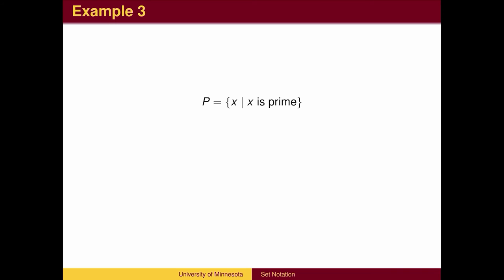Here is a set that would be difficult to write using the dot dot dot notation. The set of all prime numbers. It is an infinite set, so we can't list all of the elements, and the pattern is hard to follow.